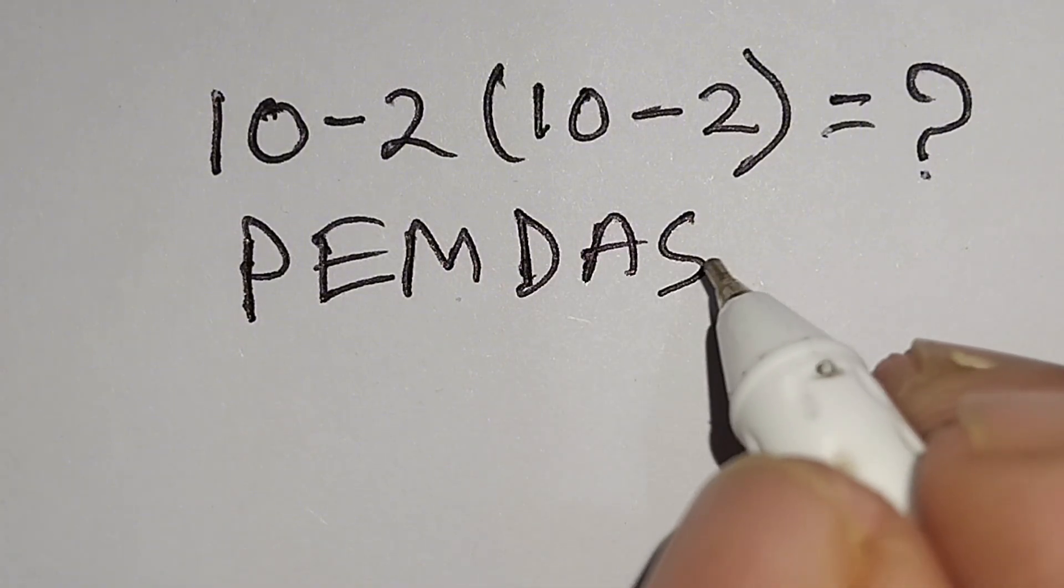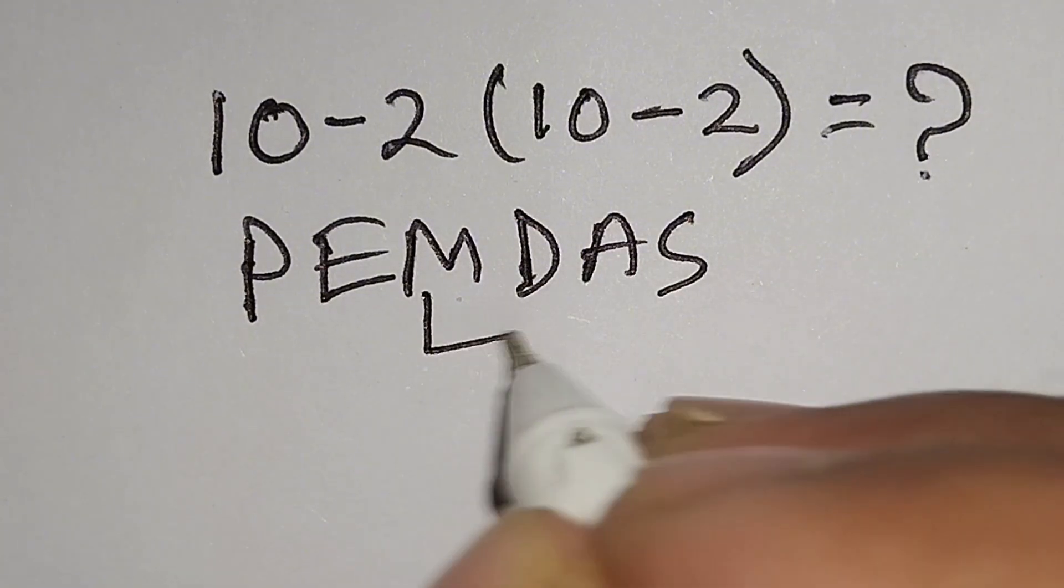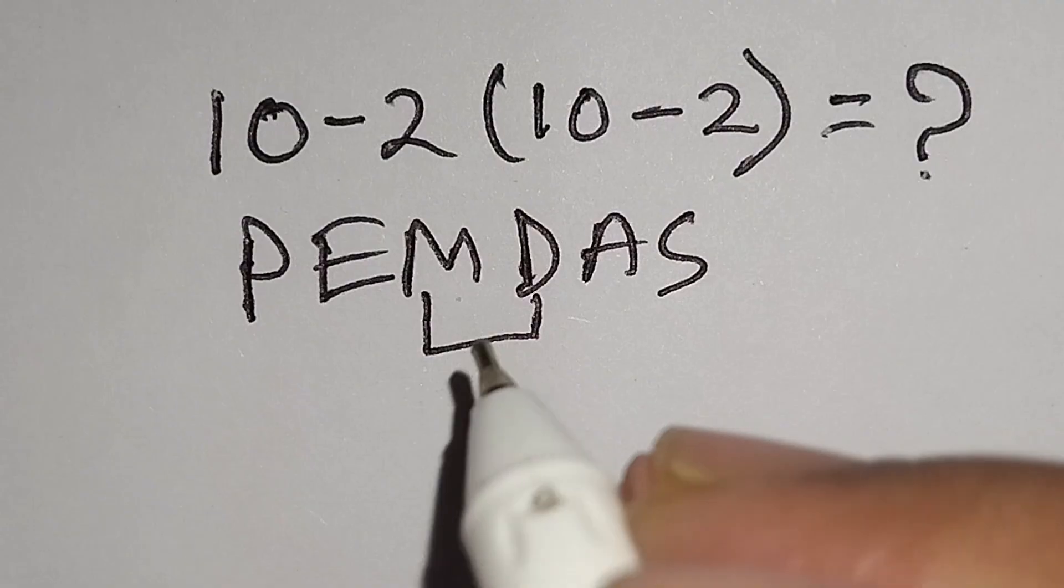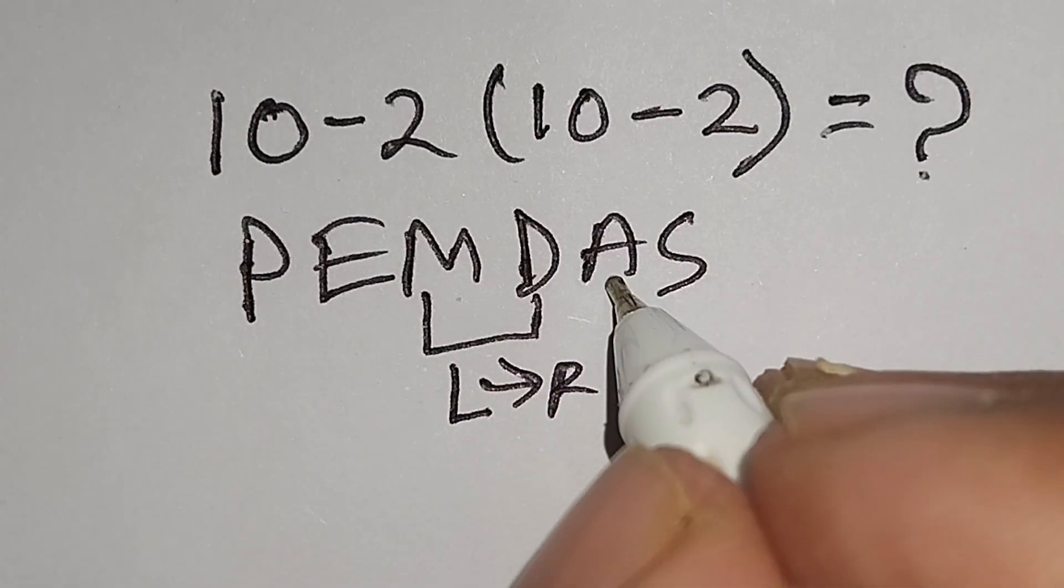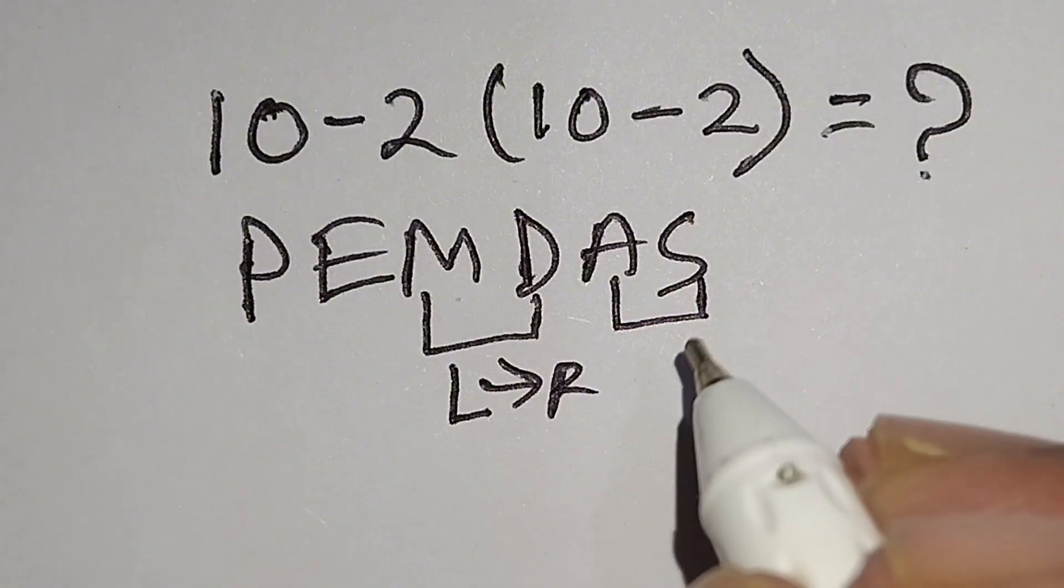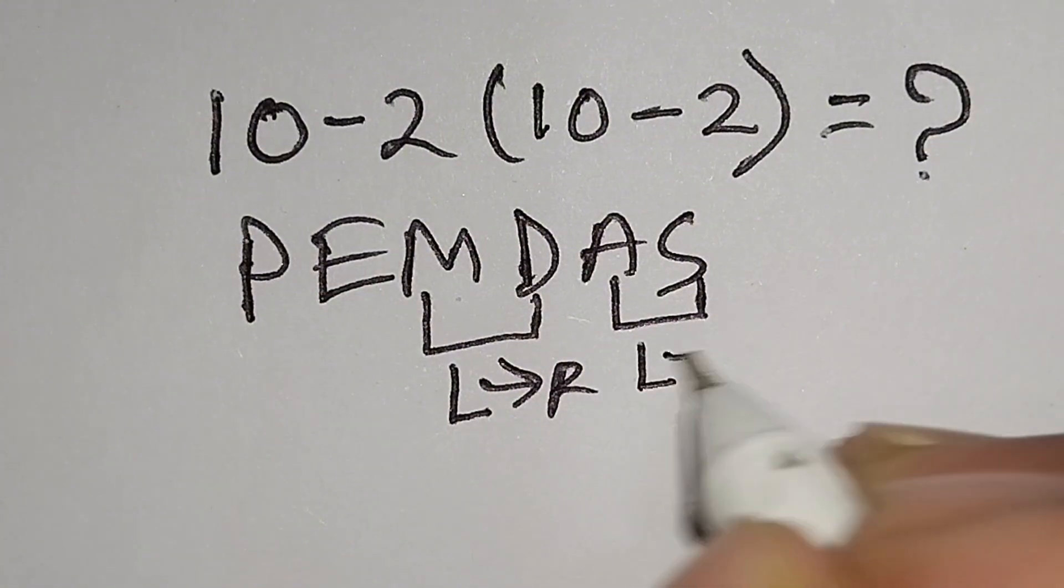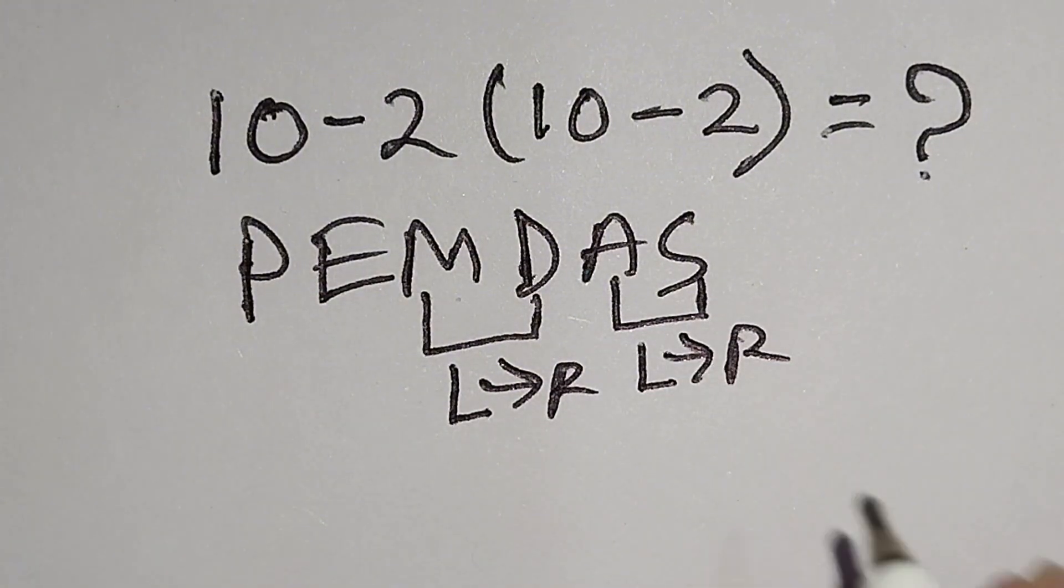Remember, multiplication and division have the same priority, for this we have to work left to right. And addition and subtraction have the same priority, for this we have to work left to right also.